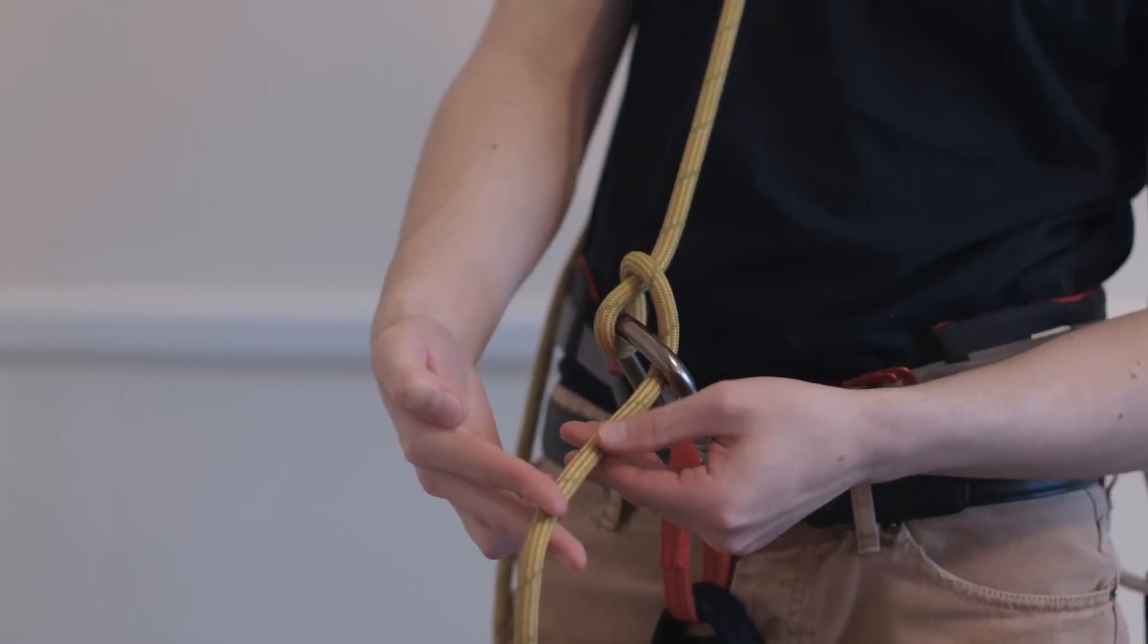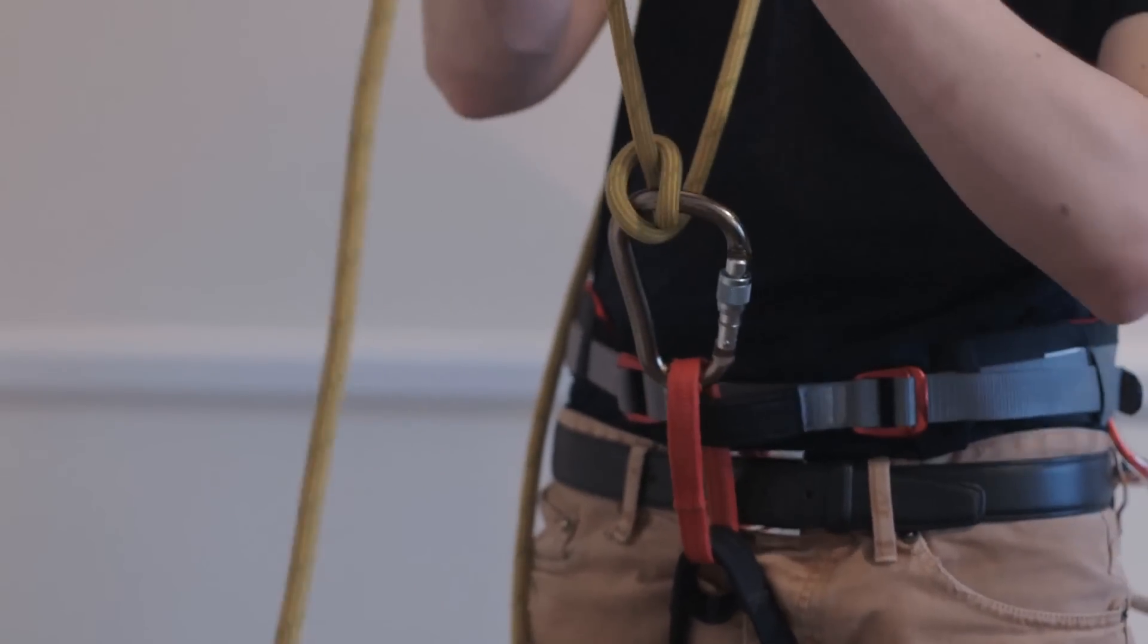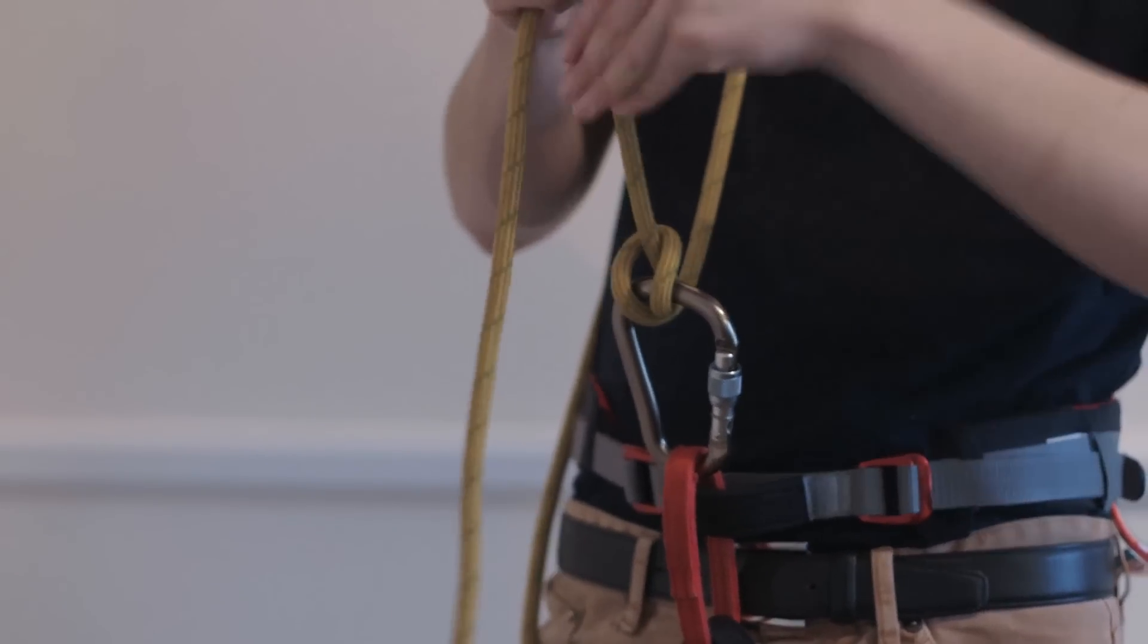So as normal, if you wanted to take in slack with your top rope climber, you would just pull it in like so. The Munter Hitch flips over and corrects, and then you just take in slack.